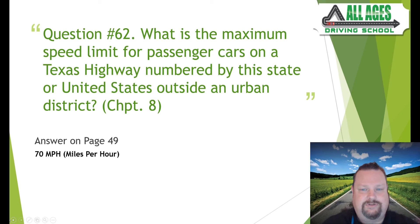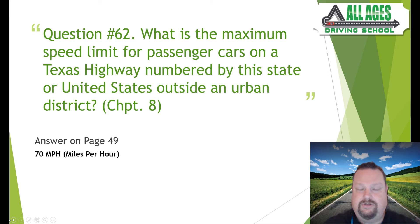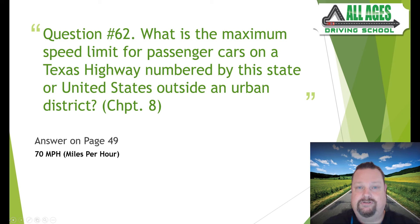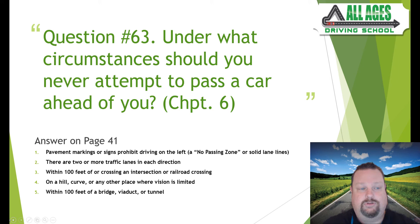Question number sixty-two: what is the maximum speed limit for passenger cars on a Texas highway numbered by the state or United States outside of an urban district? Chapter eight, answer on page 49. The default maximum is 70 miles per hour. There are roads in Texas with limits above 70, but they must be posted. If you don't see a speed limit sign outside of an urban area, the default maximum is 70 mph — don't assume you can go faster.